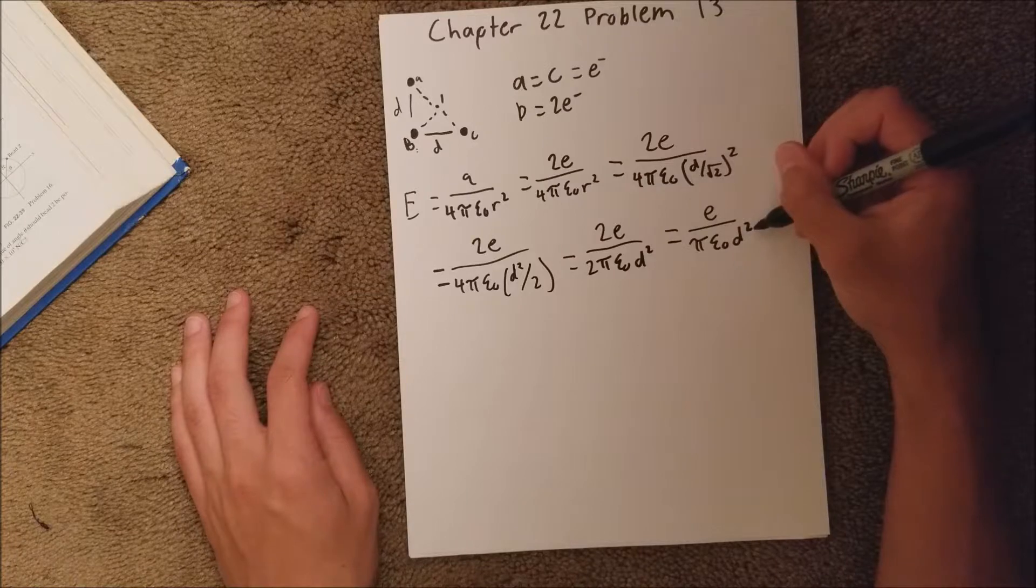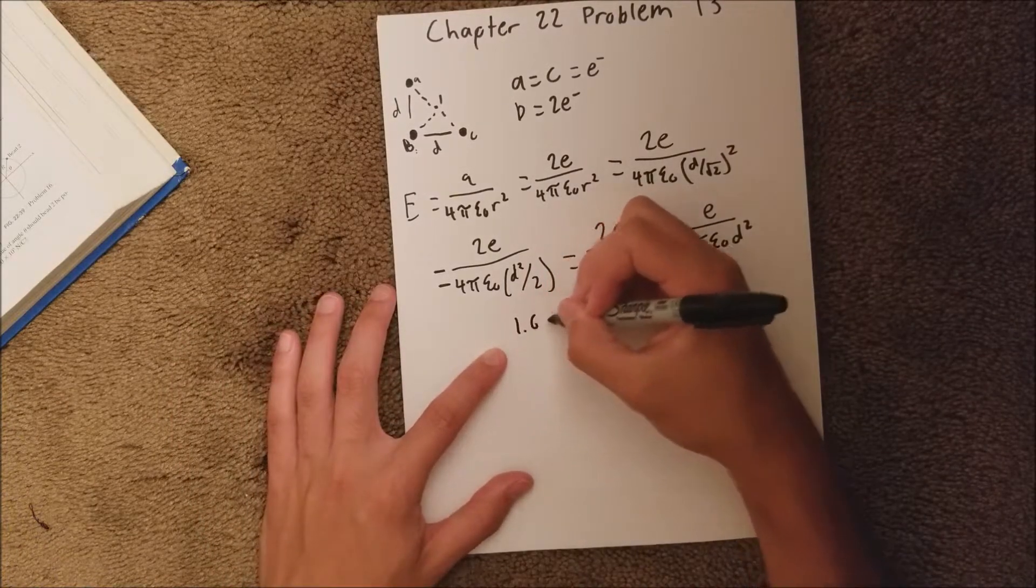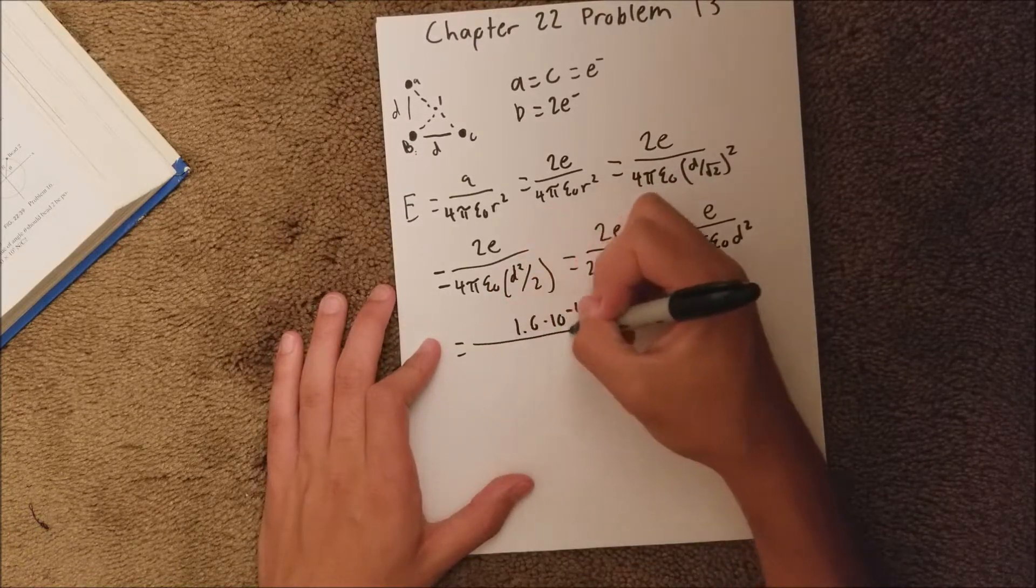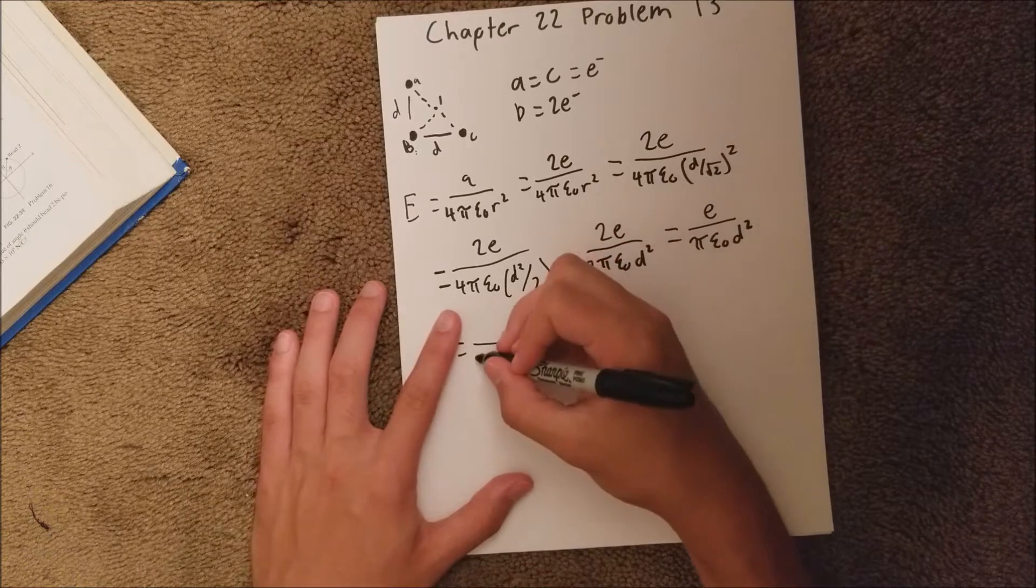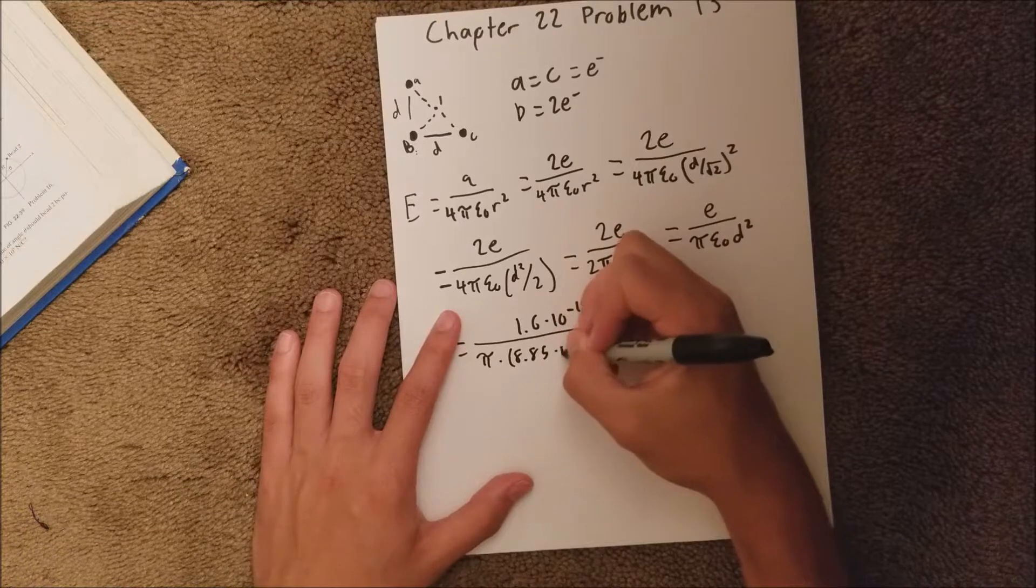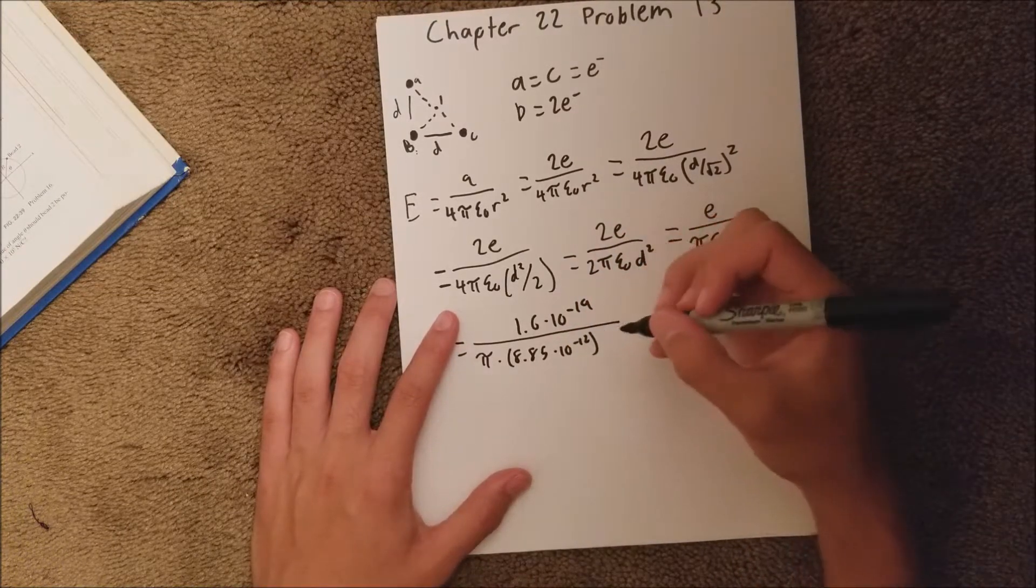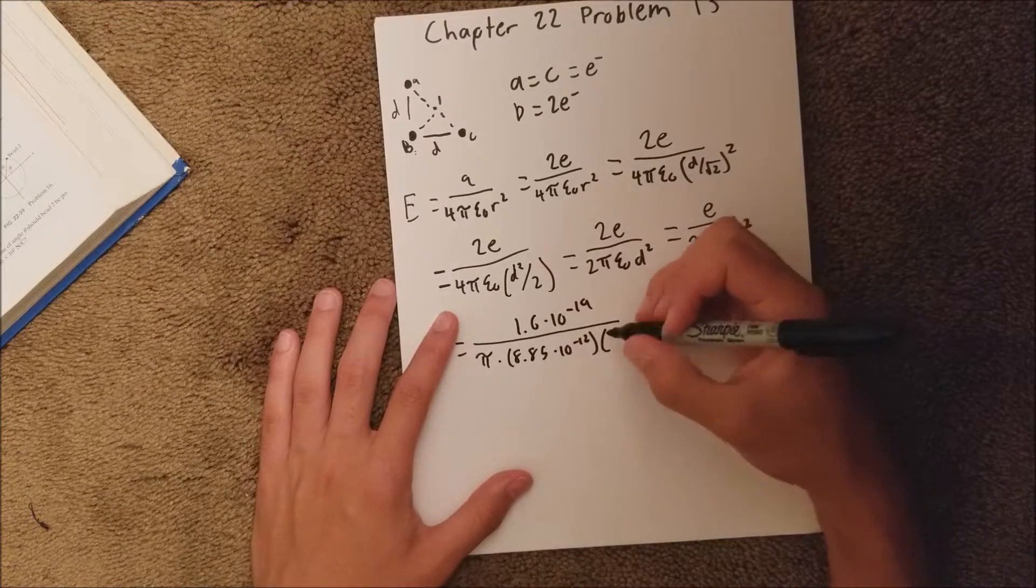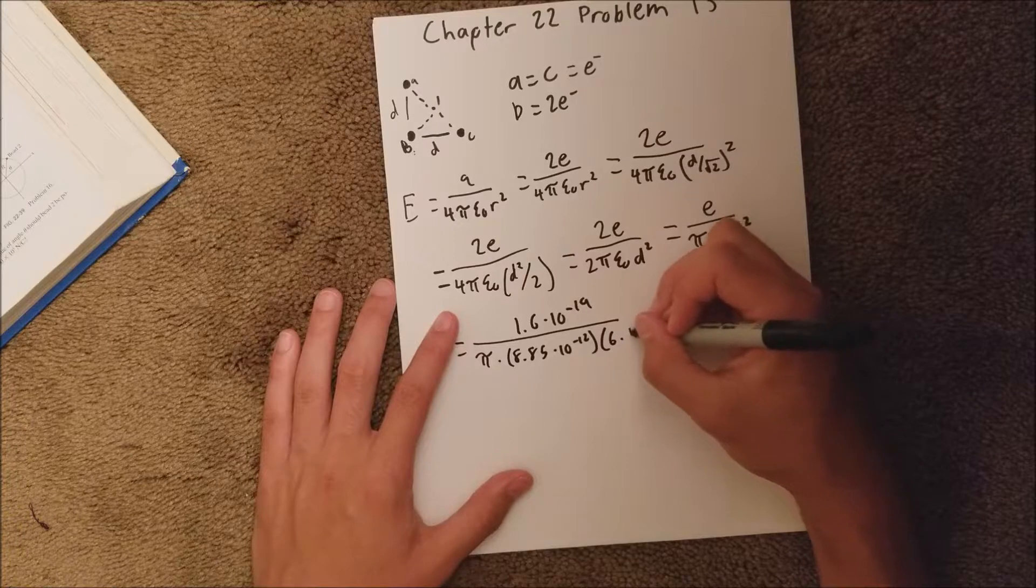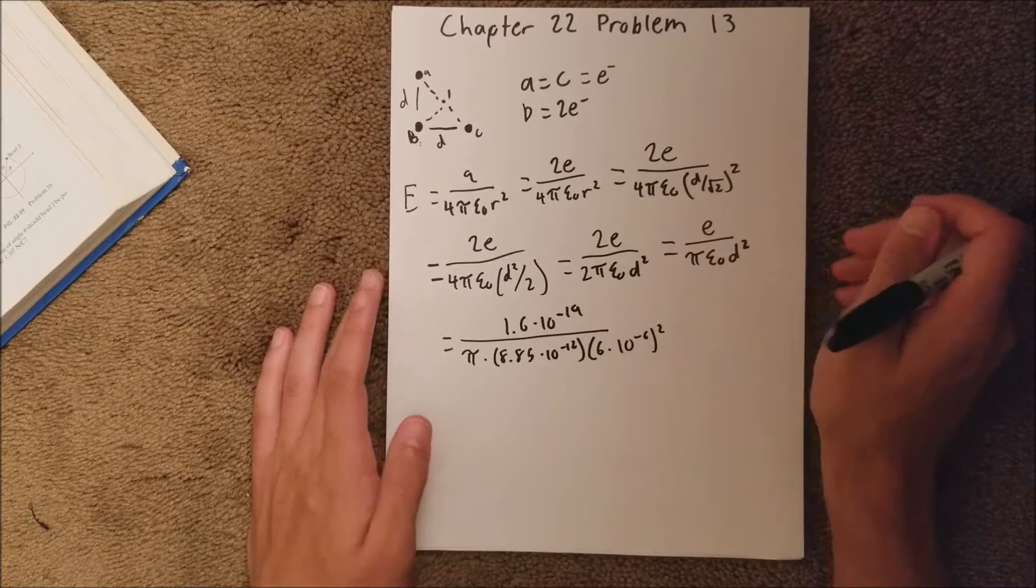And we know all these values, so we can actually plug them right in. And then we have 1.6 times 10 to the negative 19th, over pi times 8.85 times 10 to the negative 12th. And our distance here, which is 6 times 10 to the negative 6, and that's going to be squared.